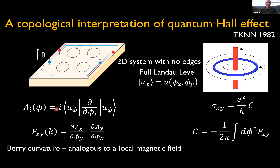Analogous to a vector potential, one can define what's called the Berry curvature, which resembles a magnetic field and is given by the curl of this vector potential. Crucially, TKNN showed that the transverse conductivity can be written as the integral over this phase space of φ parameters, giving the Chern number—an integer that parametrizes the topology of the system.